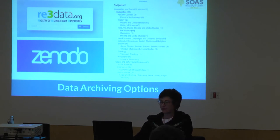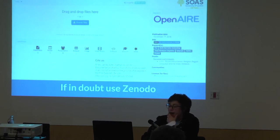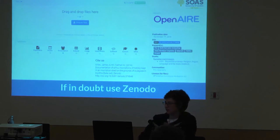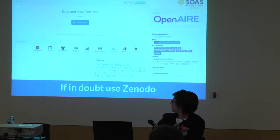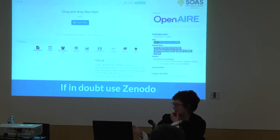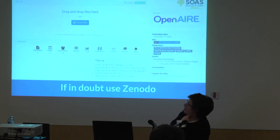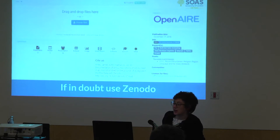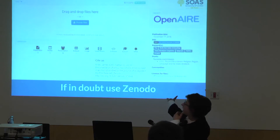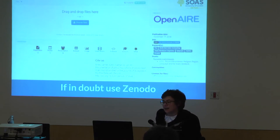If you make a case for a different repository, the ERC would likely accept it, but you'd need to contact your project officer. If in any doubt, use Zenodo. I've put some screenshots to demystify the process — you register, choose your files. You can put more materials in Zenodo than just data sets, linking other project outputs too. What you get from Zenodo is a citation, a DOI, metadata showing which project it relates to, and you can assign it to a specific community — I'm thinking of starting a SOAS community — plus a licence for reuse.